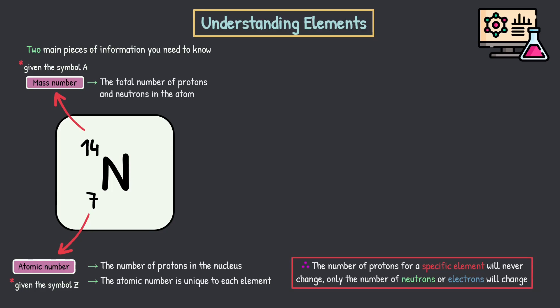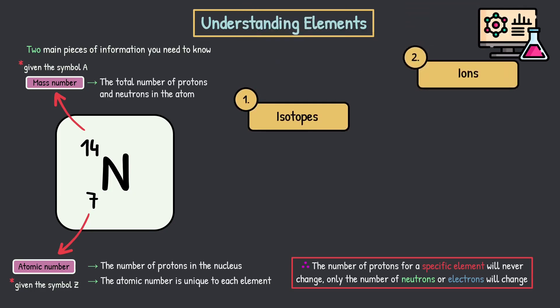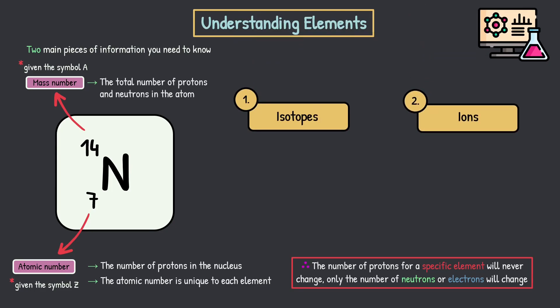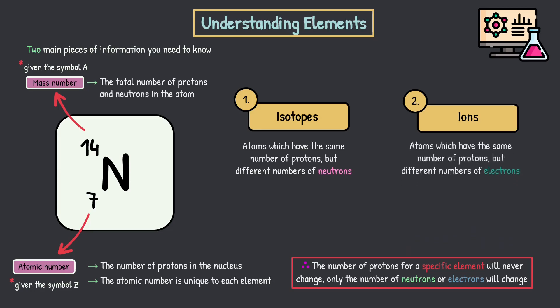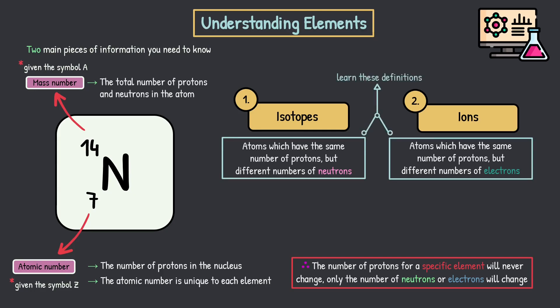There are two things I'm going to look at now — isotopes and ions. What are isotopes? Isotopes are atoms which have the same number of protons but a different number of neutrons. And ions on the other hand are atoms which have the same number of protons but a different number of electrons. Remember these two definitions because they can come up in your exam. Isotopes: different number of neutrons. Ions: different number of electrons.